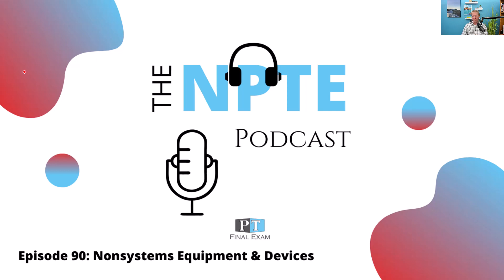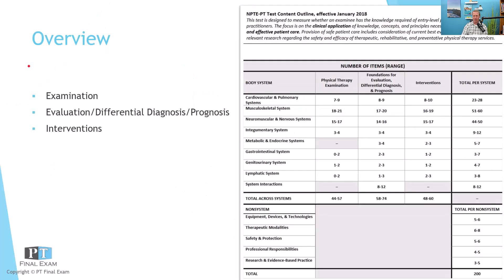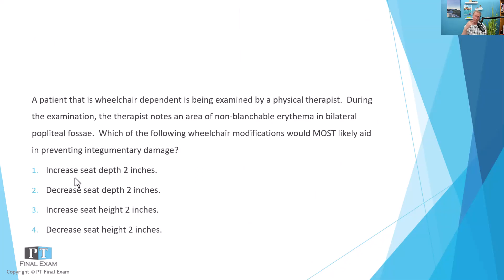Let's go ahead and get started with today's question about the non-systems. On the exam, you can expect somewhere between five and six questions related to the non-systems — equipment, devices, and technologies. It covers a wide variety of topics. As per usual, I will read the question to you, give you a moment to formulate your response, talk about the answers, and then give you some tips to remember this for test day.